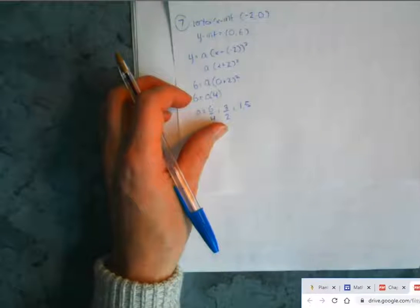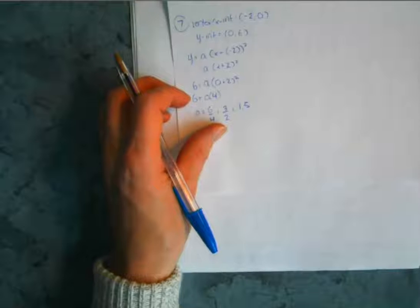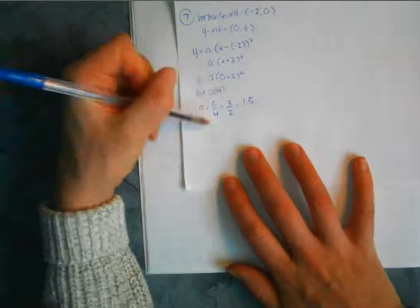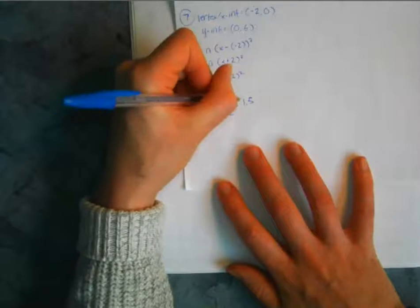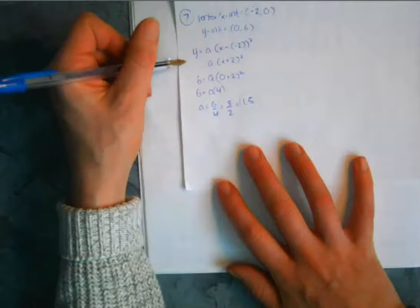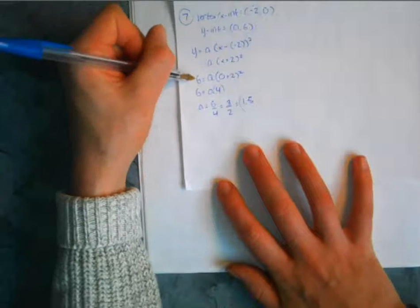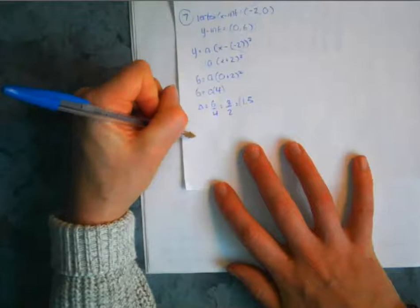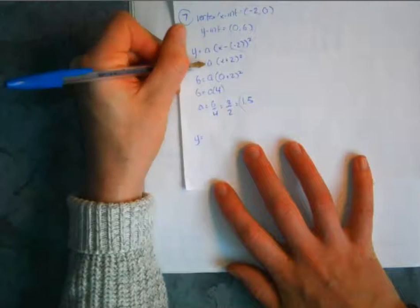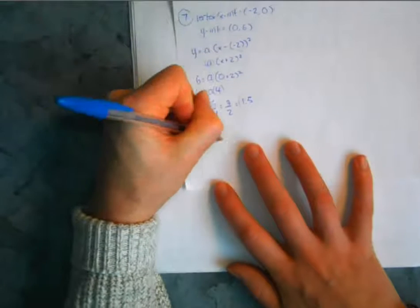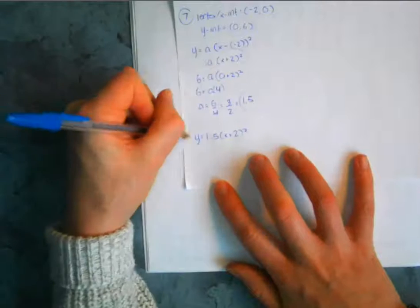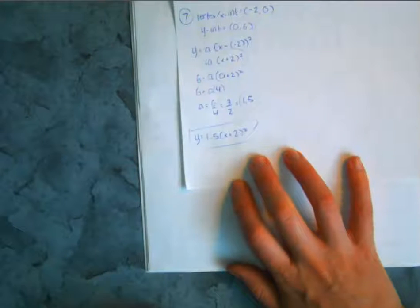They wanted us to determine the quadratic function that defines the parabola. Now we have everything we need. We put those two things together: y equals 1.5 times x plus 2 squared. And that would be our final answer for question 7.